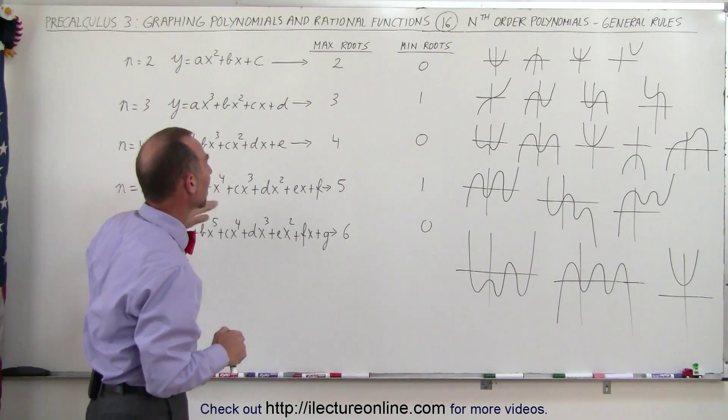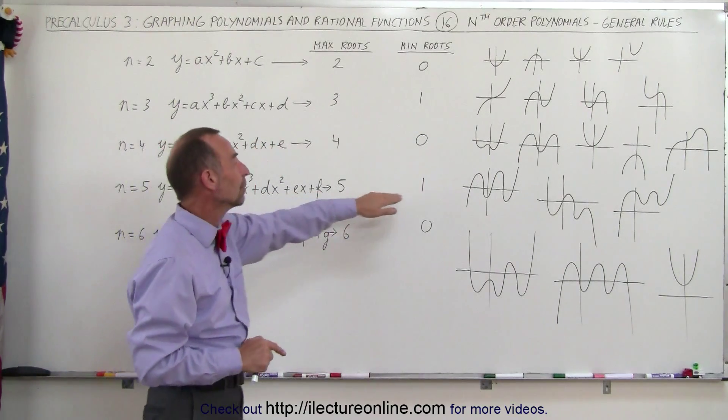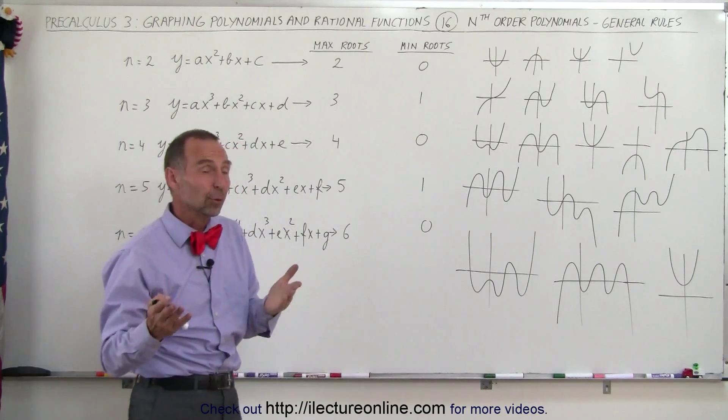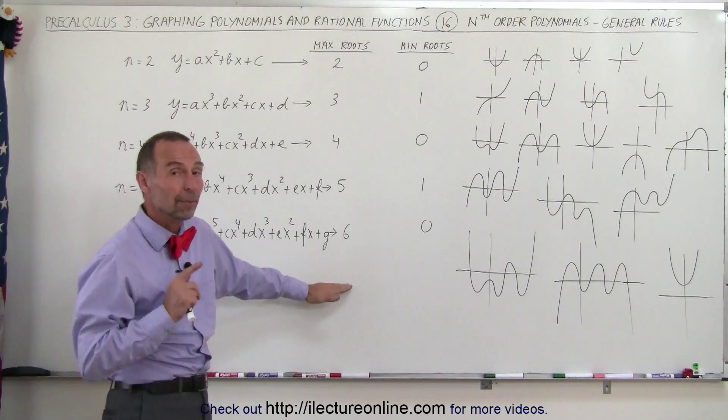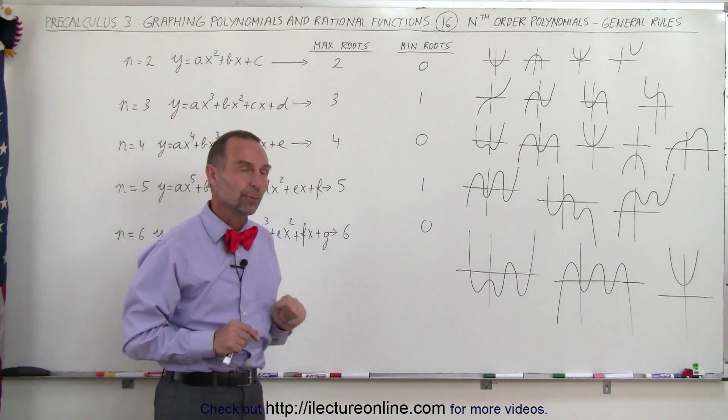A fifth-order polynomial has a maximum number of roots of 5, and a minimum of 1, and so forth. A seventh order then would be 7 maximum roots, and 1 for the minimum.